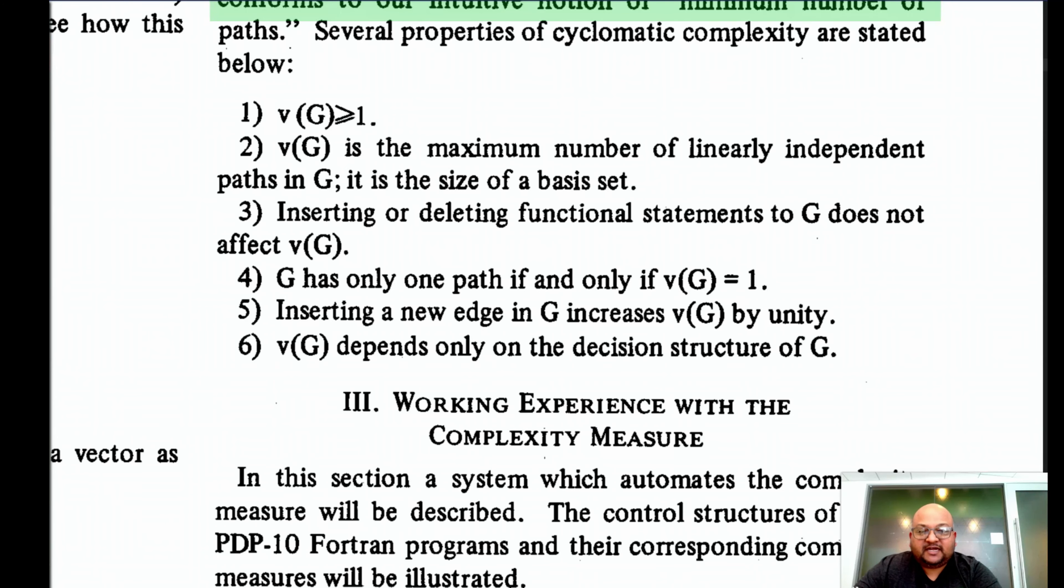Here are some properties of cyclomatic complexity. It is always at least one because the simplest program, which is a straight line sequential program, has cyclomatic complexity one. It is the maximum number of linearly independent paths in G, which is to say that it is the same as the size of a basis set of paths. And these are the basic paths using combinations of which you can construct all paths through a program.